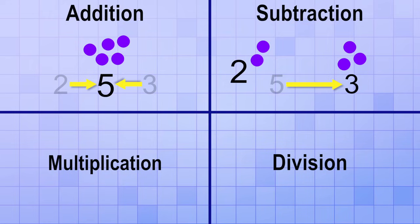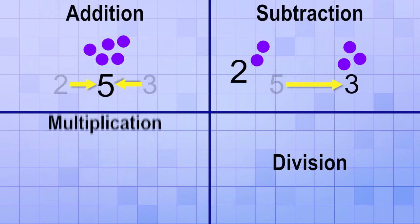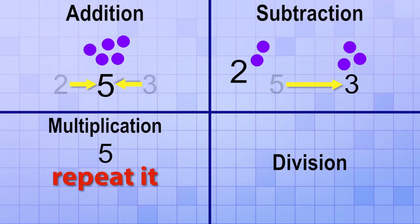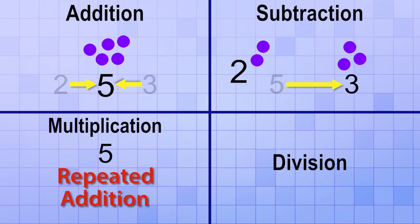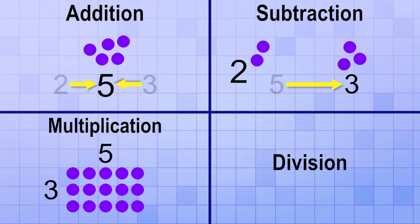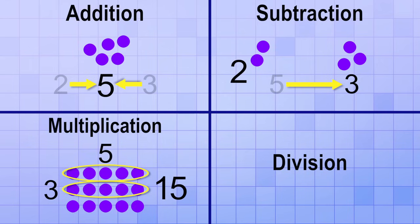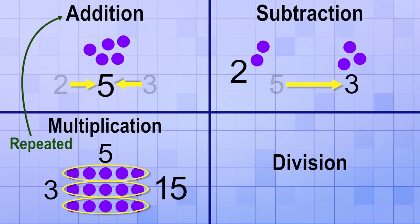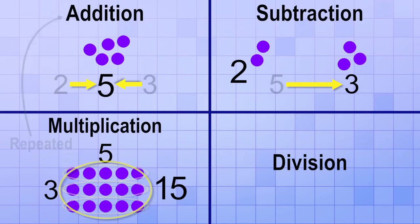Subtraction takes an amount away from another amount. The multiplication operation tells us to take one number and then repeat it a certain number of times. It's basically just repeated addition. For example, if we have the amount 5 and we multiply it by 3, that means we combine 3 groups of 5 to get a total of 15. So 5 times 3 is the same as 5 plus 5 plus 5. See how it's just repeated addition? Multiplication takes an amount and repeats it a number of times.